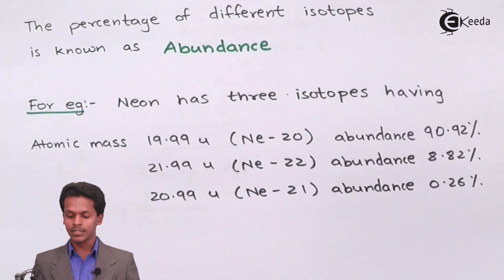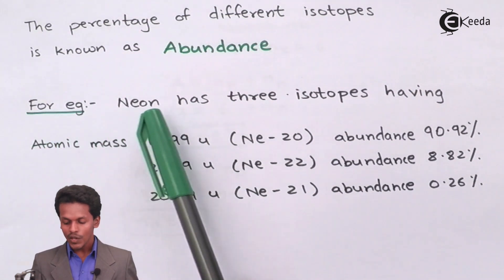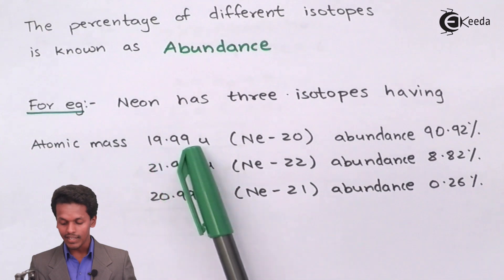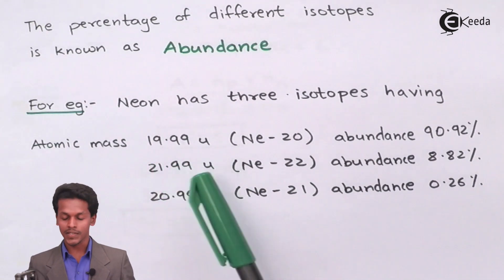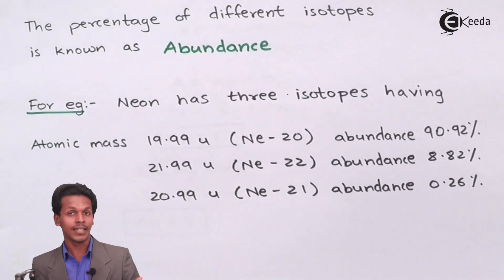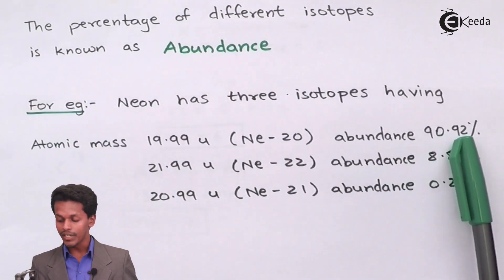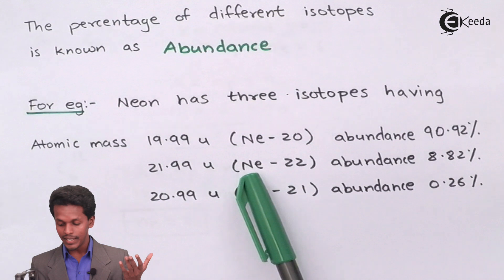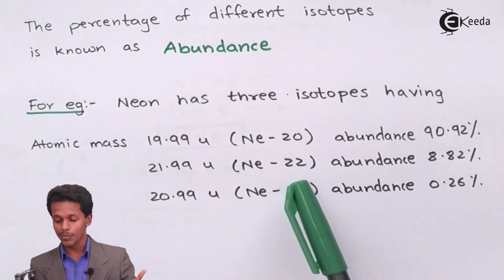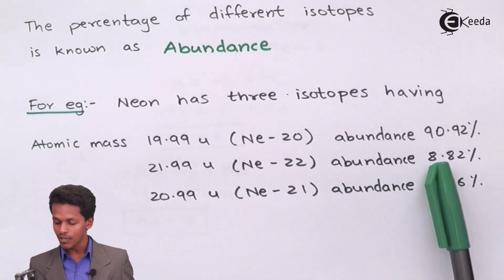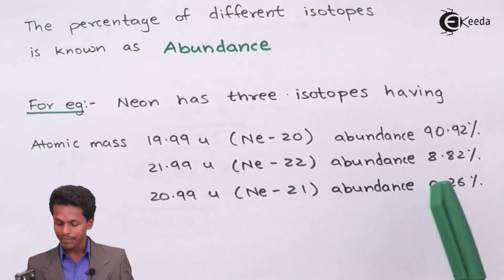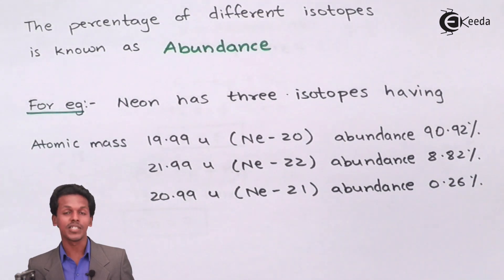Let me give an example using neon, which has three isotopes. Neon-20 has an atomic mass of 20 u (unified mass unit) and an abundance of 90.92% in nature. Neon-22 has an atomic mass number of 22 with an abundance of 8.82%, and Neon-21 has an abundance of 0.26%.